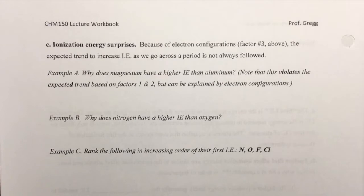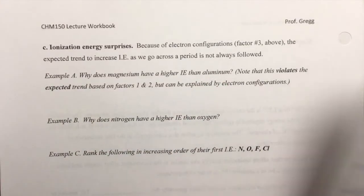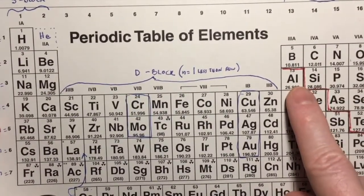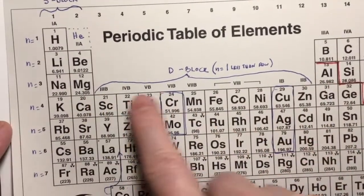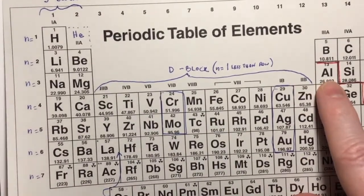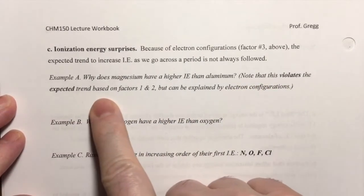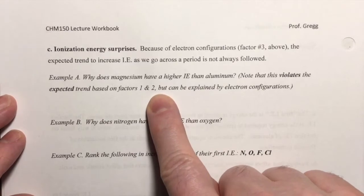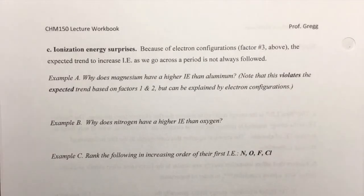Coming back to example A: magnesium has a higher IE than aluminum, and this violates the expected trend based on rule two, which would say we would normally expect aluminum to have a higher IE than magnesium because of the extra proton in its nucleus. It does not violate the trend based on rule one, but it does violate the trend based on rule two. It can be explained by electron configurations, so let's take a look at the electron configurations of magnesium and aluminum.